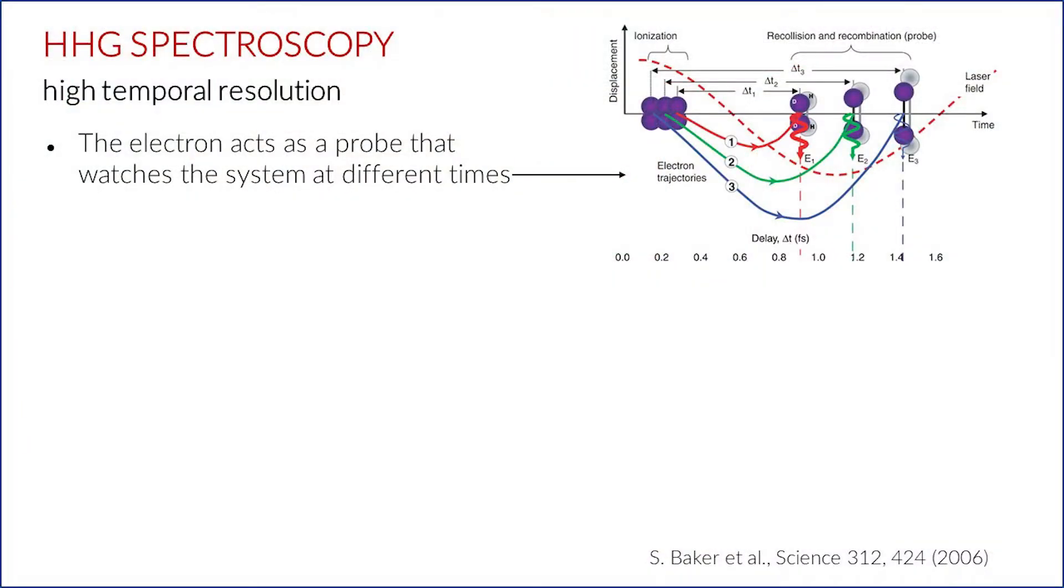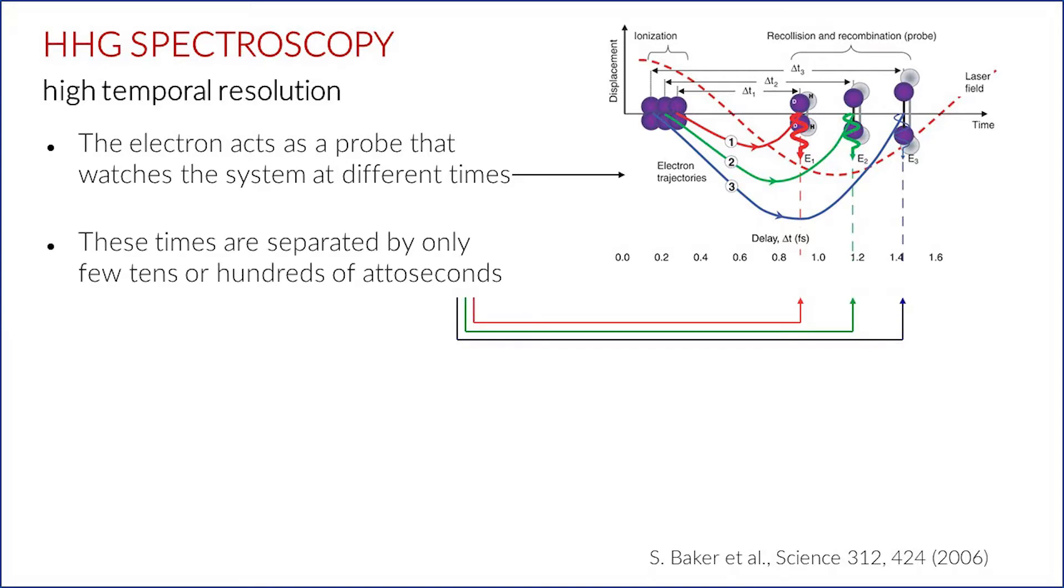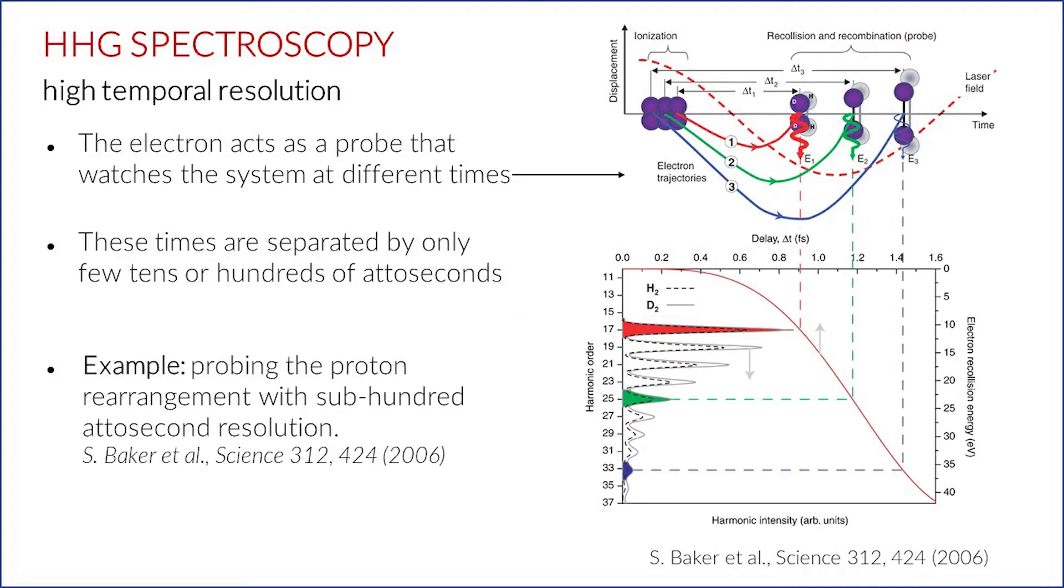In this type of experiment, the electron acts as a probe that watches the system at different times, which are separated by only few tens or hundreds of attoseconds. For instance, this technique was used by Baker and co-workers to retrieve the proton rearrangement in molecular hydrogen and deuterium with sub-hundred-attosecond resolution.